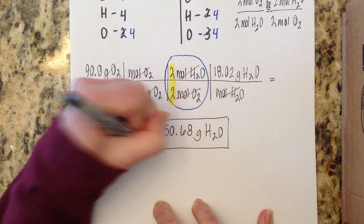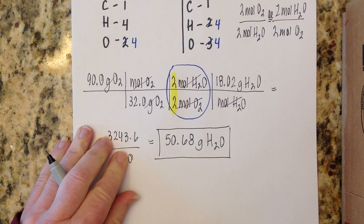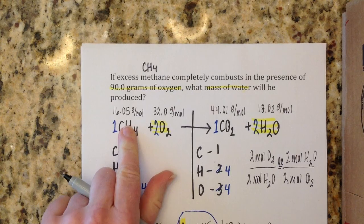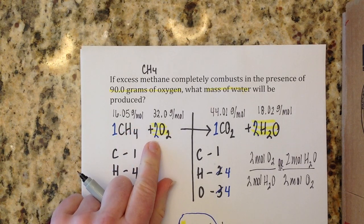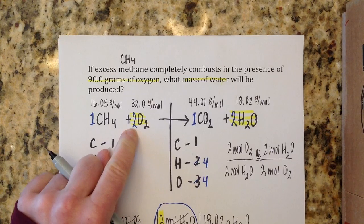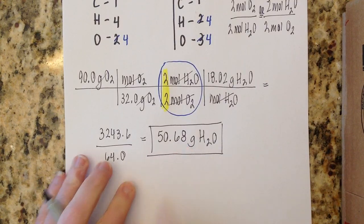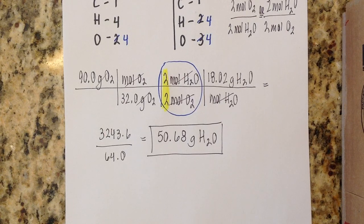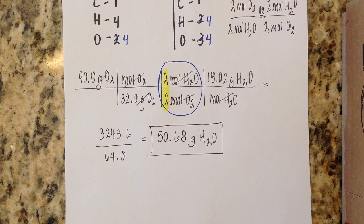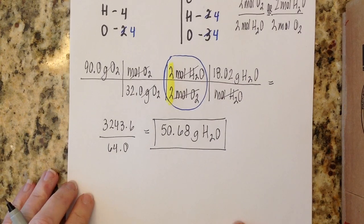Here's what you just found: if you have plenty of methane and 90 grams of oxygen, you will make 50.68 grams of water. Stoichiometry is all about: if you have this much of something, how much of this can you make? Or if you want to make this much, how much of something else do you need? It's a recipe — you're comparing your reactants to how much product you can make, or determining how much you need to make a certain amount.